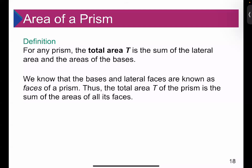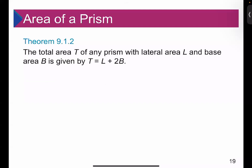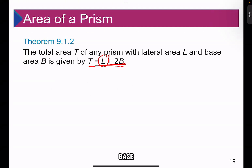For any prism, the total area is the sum of the lateral area and the areas of the bases. The total area T of the prism is the sum of the areas of all its faces. Theorem 9.1.2 states: the total area T of any prism with lateral area L and base area B is given by T = L + 2B — the lateral area plus the area of the two bases.